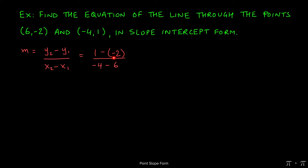Negative times a negative is positive. So for the numerator, we get 1 plus 2. For the denominator, -4 minus 6 remains. At this stage, we can add the numerator and the denominators. So 1 plus 2 will give us 3. Negative 4 minus 6 will give us -10.